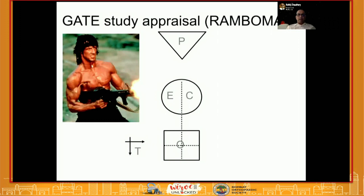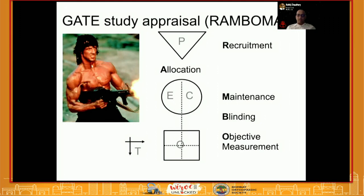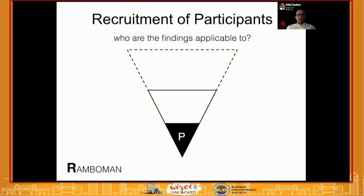In the Participants step, the first letter of the RAMBO mnemonic is Recruitment. Then comes Allocation — allocation into the two groups, exposure and control. Then Maintenance — how the two groups were maintained. Then Blinding — how objective assessment was done. And lastly, Analysis. If you remember this mnemonic at every step, you will be able to question the paper as to its validity.